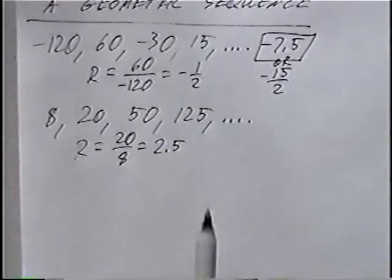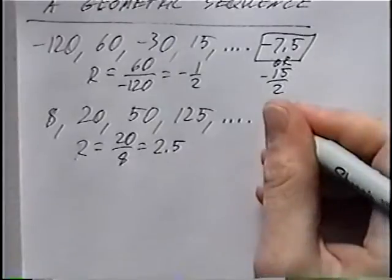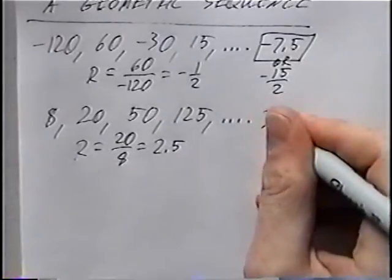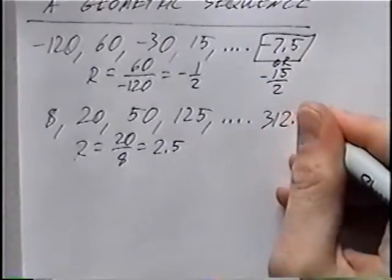So the next term would be 125 times 2.5, which equals 312.5.